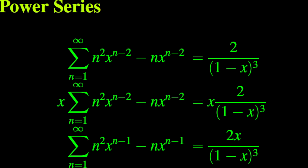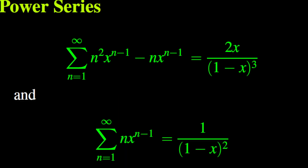Now if we multiply both sides of the equality by x, we obtain a new series on the left-hand side with terms n squared times x to the power n minus 1, minus n times x to the power n minus 1, and on the right-hand side the function 2x over (1 minus x) cubed. Note that, using the series of first derivatives, we have already established that the series n times x to the power n minus 1 equals 1 over (1 minus x) squared.